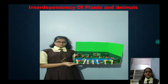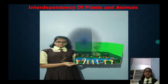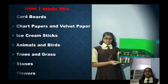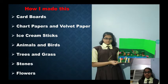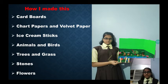You can see a beautiful model of interdependency of plants and animals which I have made by using cardboards, chart paper and velvet paper, ice cream sticks, animals and birds, trees and grass, stones and flowers.